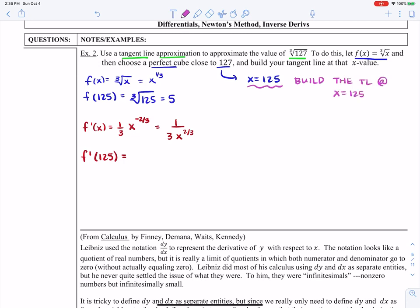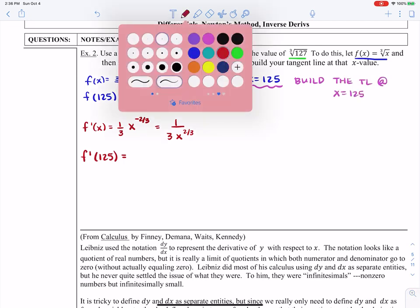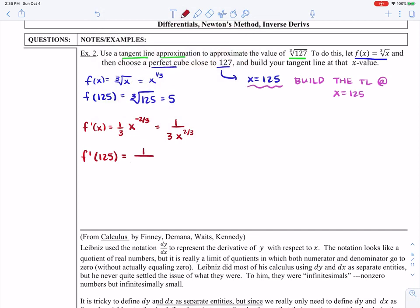So really important, this is where we're going to build the tangent line, because it's close to 127. So we're going to plug in, we're going to go one over three times 125 to the two thirds power. Now don't square that first, we'll take the cube root of it first and get five. And then five squared will be 25 and get 1 over 75.